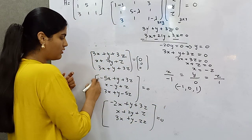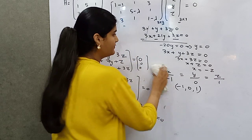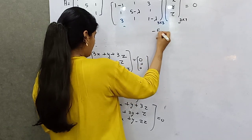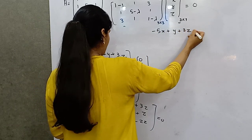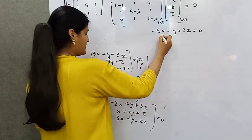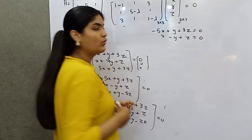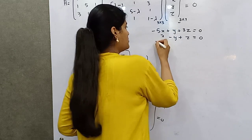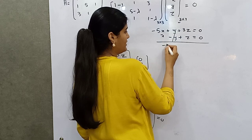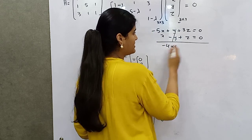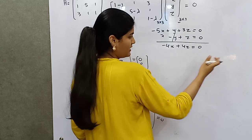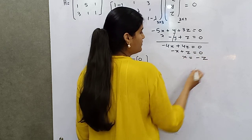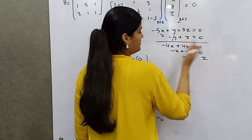Now solving for lambda = 6: minus 5x + y + 3z = 0 and x minus y + z = 0. Adding these two equations eliminates y: minus 4x + 4z = 0, so x = z.